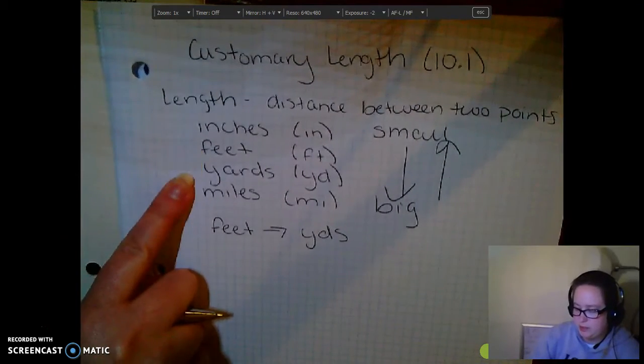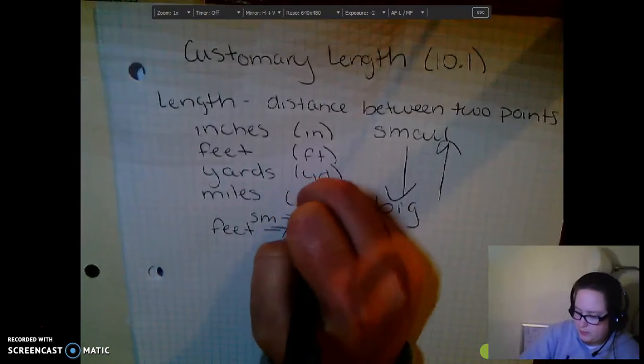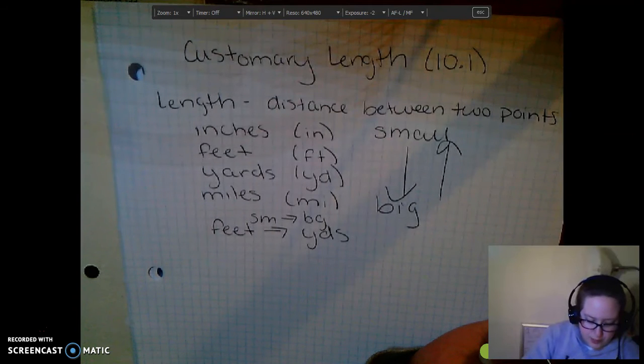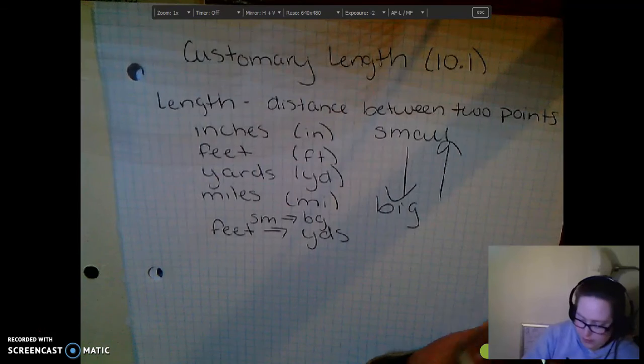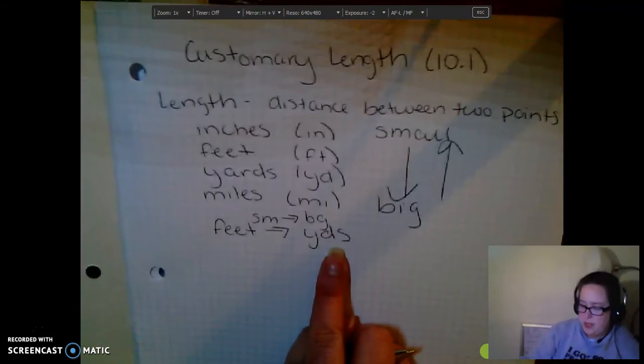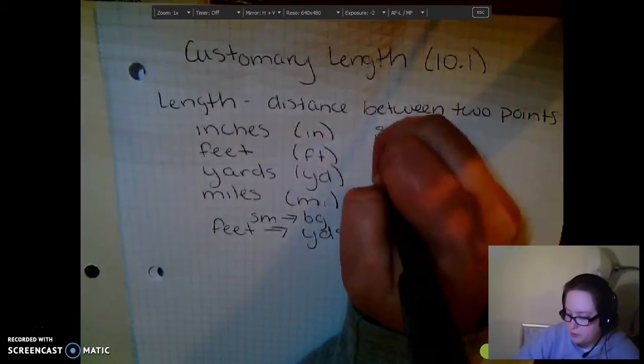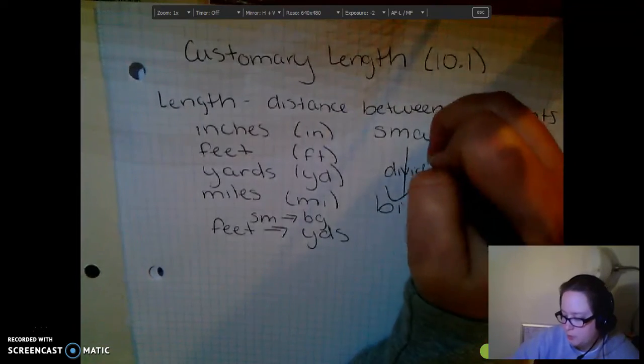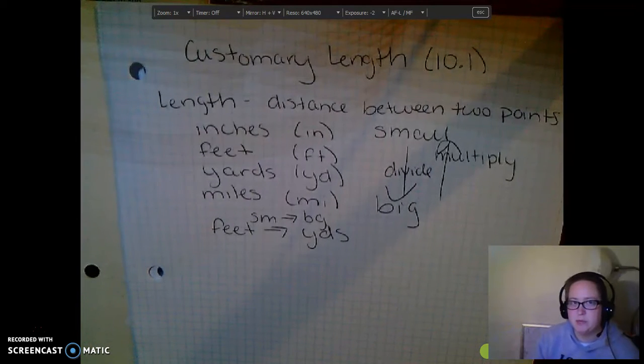Well, in this case, from feet to yards, we're going small to big, or small to large. What that means, when we go from small to large, that means we're going to be dividing. So, small to large, we divide. Big to small, we multiply. So, that's the first thing every time we're going to try to figure out. Are we going from small to big? Or are we going from big to small?